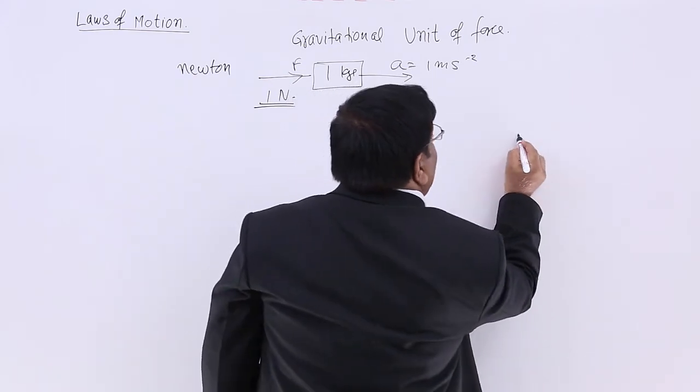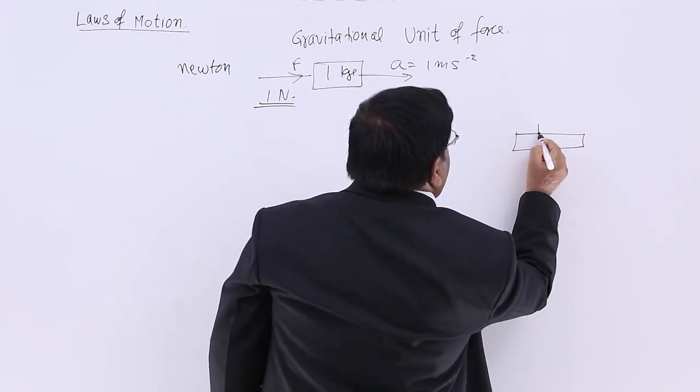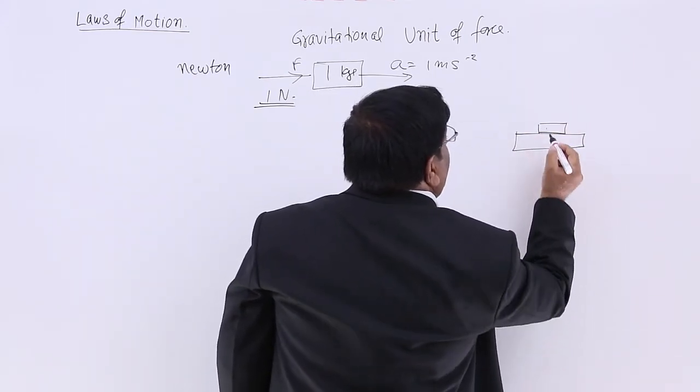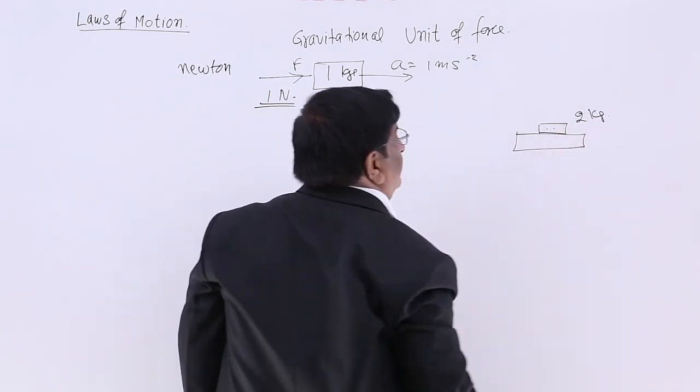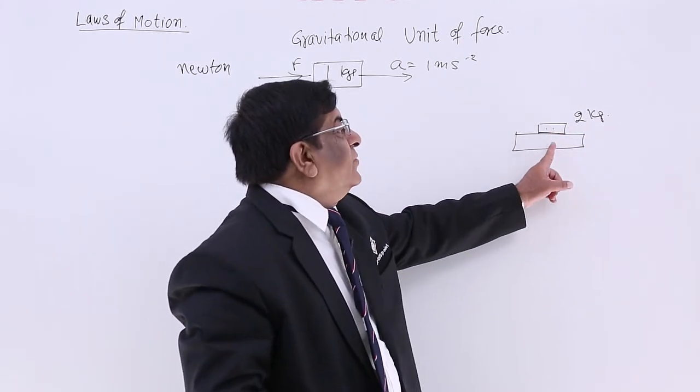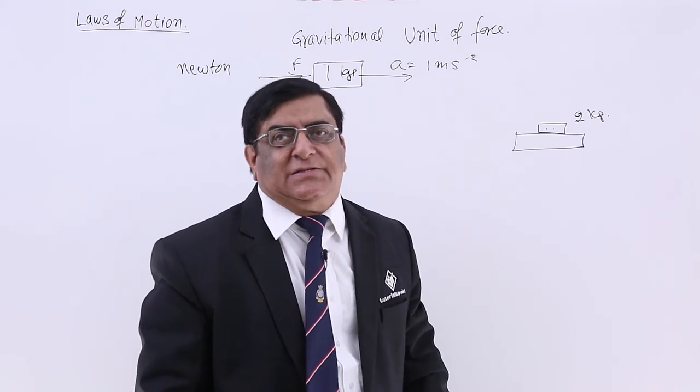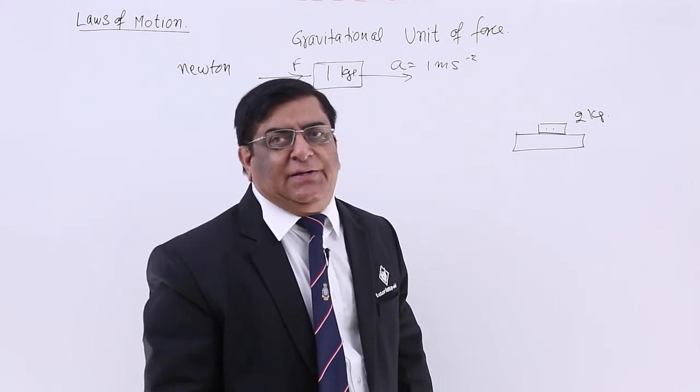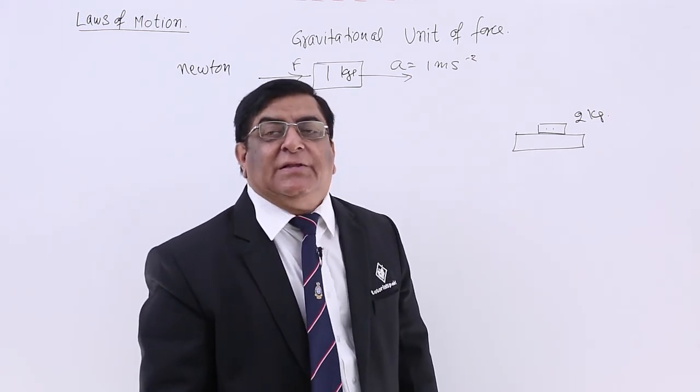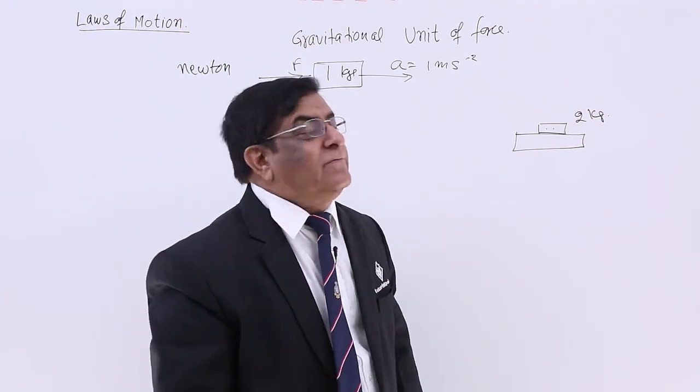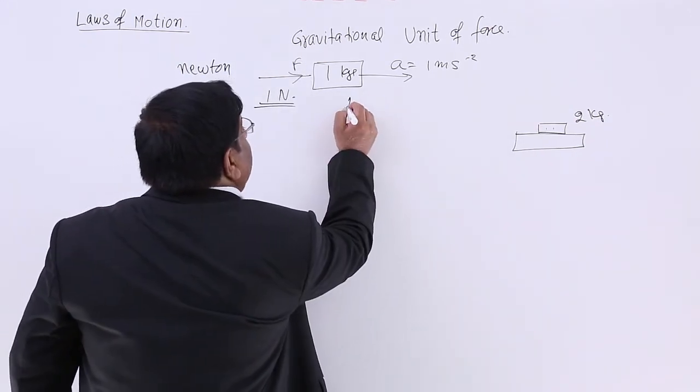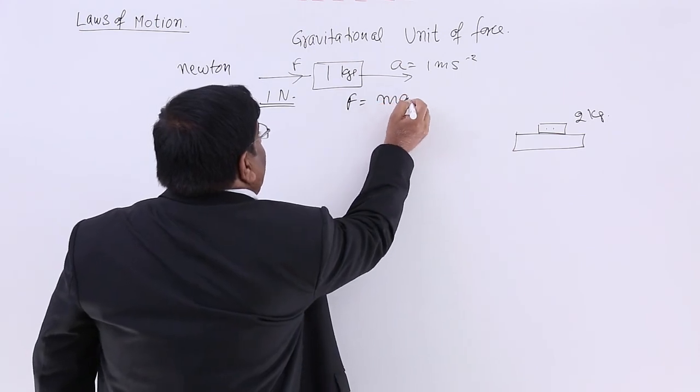But suppose I have this table. On this table a book is lying here. This book weighs 2 kg. Is this book applying force on it? Answer is yes, it is applying force on it. How much is that force? Then you will say we need to have the value of acceleration because force is equal to mass into acceleration.